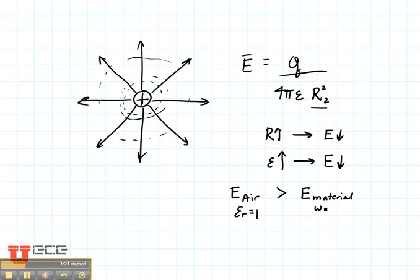such as water, which has an epsilon r of 80. The magnitude of these electric fields—the direction is going to stay the same.